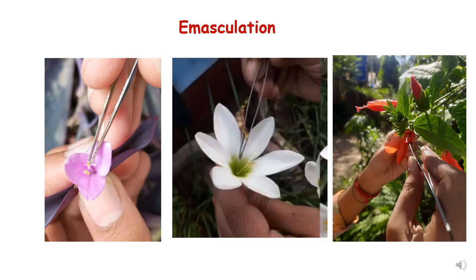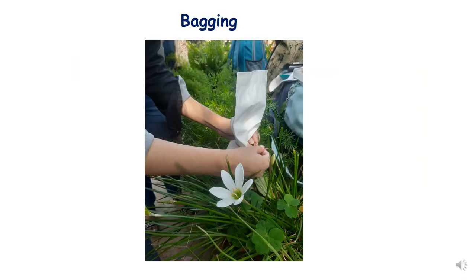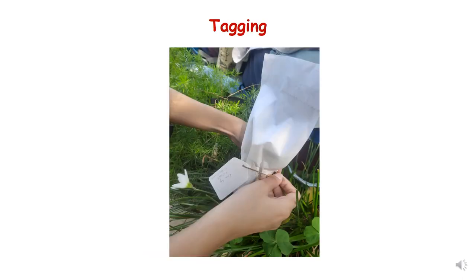Here you can see pictures showing the process of emasculation in three different flowers where the anthers are being removed. This is also a picture of bagging, where the anthers have been removed and the plant is bagged so that pollination can be done after some time. In the tagging picture, plants are tagged after bagging with the date of emasculation and the name of the plants written on the tag.